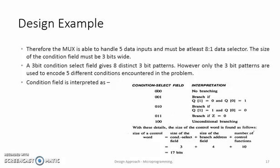A 3-bit condition select field gives 8 distinct 3-bit patterns. However, only the first 5 three-bit patterns are used to encode the 5 different conditions encountered in this problem. With this design, the condition select field may be interpreted as shown in the slide.